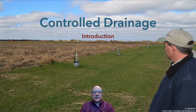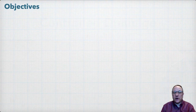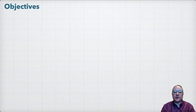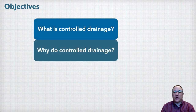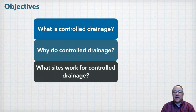This video is the first in a series on the practice of controlled drainage. The learning objectives for this video are to first, understand and be able to describe what controlled drainage is; second, understand and be able to describe the goals of controlled drainage; and finally, understand and be able to list site characteristics for fields that are most suitable for controlled drainage.